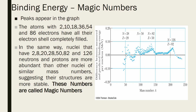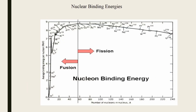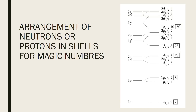These numbers — 2, 8, 20, 28, 50, 82, and 126 — are known as magic numbers, representing the most stabilized nuclei. In the graph of average binding energy versus number of nucleons, helium and oxygen are observed to deviate from the general trend, showing higher nuclear binding energy, which indicates greater stability. These correspond to the magic numbers.